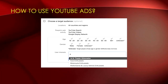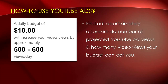Next, you can choose a target audience if you want your ad to be displayed to specific targeted audiences. The targeting criteria includes age, gender, web activity, and user interests. As you create your YouTube ad, you can find a small tab on the right side of your page where you can see approximately how many video views the budget you set will bring to you.